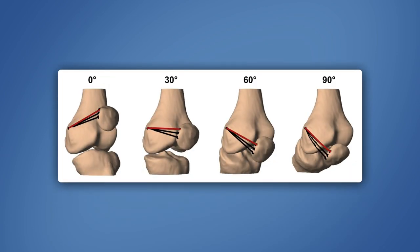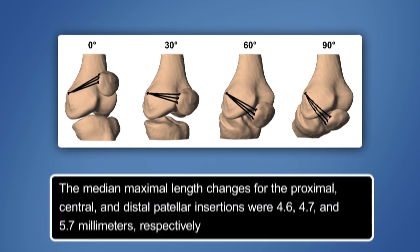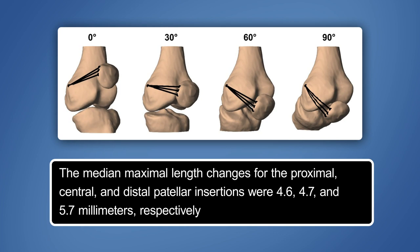They then calculated the percent changes in MPFL length in relation to knee anatomical features. The proximal fiber was the longest in full extension, and its median length decreased by up to 6% at 90 degrees of flexion. The median length of the central fiber decreased by 2.8% during flexion, and no elongation was observed. In contrast, the median length of the distal fiber decreased slightly upon initial flexion but increased at deeper flexion angles. The median-maximal length changes for the proximal, central, and distal patellar insertions were 4.6, 4.7, and 5.7 millimeters, respectively.